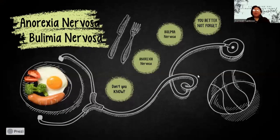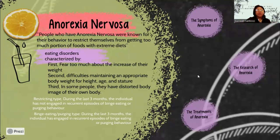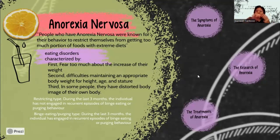First, let's learn more about anorexia nervosa. People who have anorexia nervosa are known for their behavior of restricting themselves from eating too much, with extreme diets. Anorexia nervosa is an eating disorder characterized by: first, extreme fear of weight gain; second, difficulty maintaining an appropriate body weight for one's height, age, and stature; and third, a distorted body image. Due to these factors, people with anorexia nervosa restrict the number of calories they eat, the types of food they eat, and are even willing to endure hunger in order to control their weight.